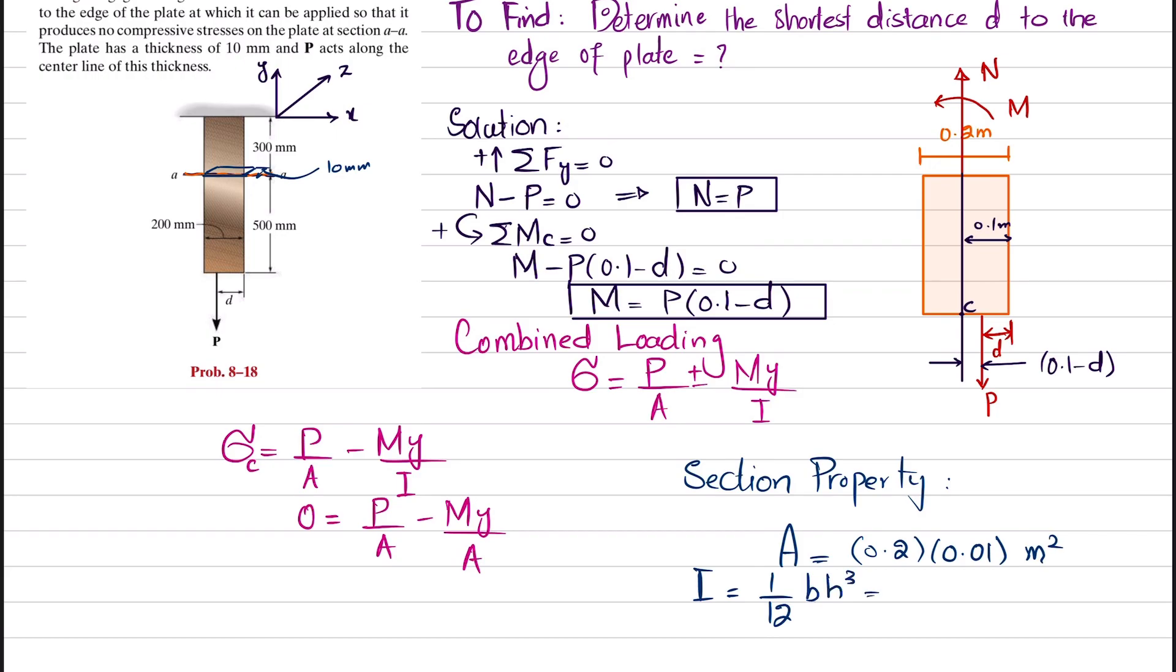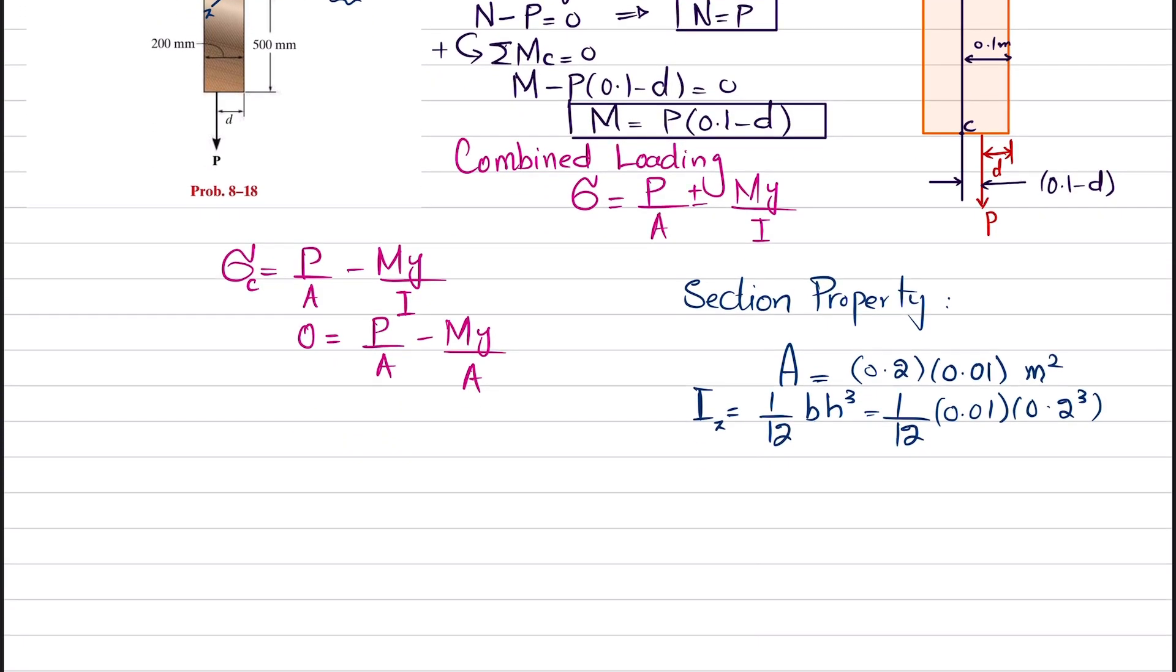Now we find I about the Z axis. I_z equals 1/12 bh^3. B is 0.01 and height is 0.2 cubed. The unit will be meter to the power 4.